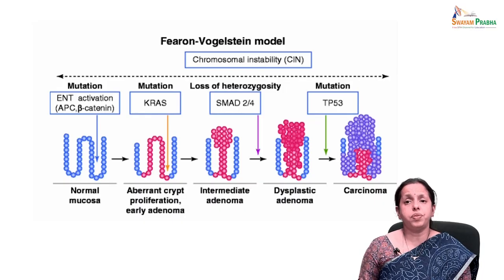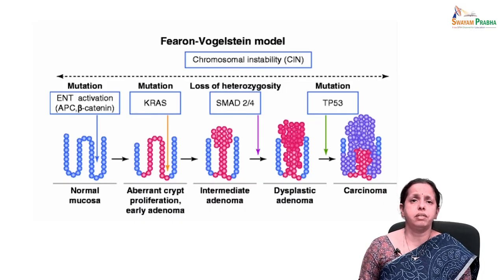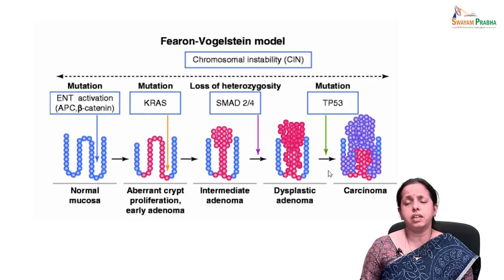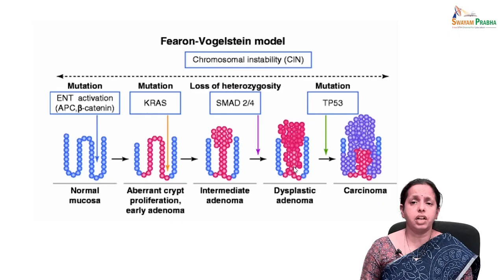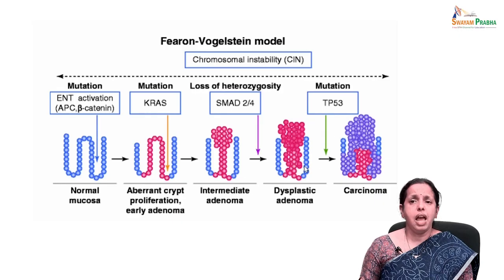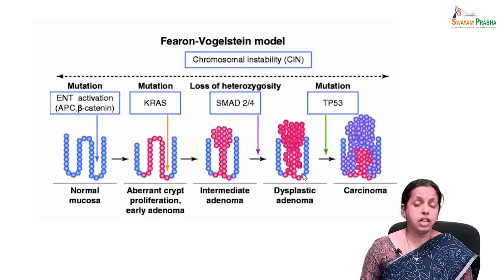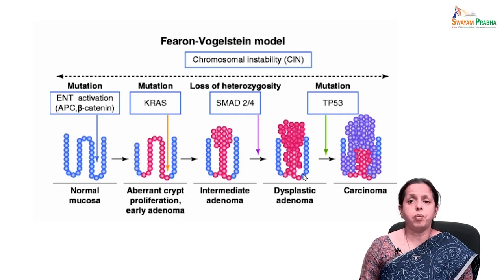Sometimes mutations in BRAF — common in MSS colorectal cancer — occur in place of KRAS mutations. Mismatch repair (MMR) deficiencies in sporadic CRC occur predominantly by downregulation of MLH1 through promoter methylation.